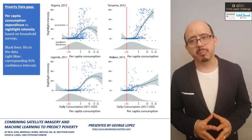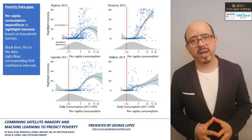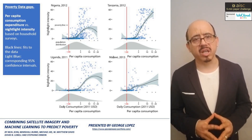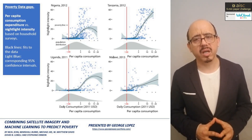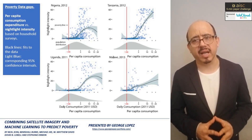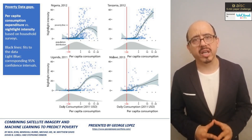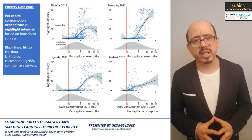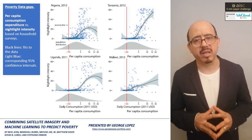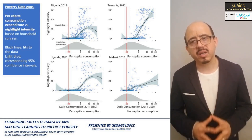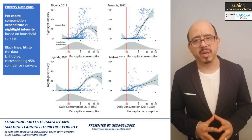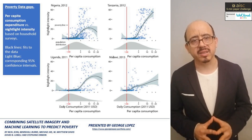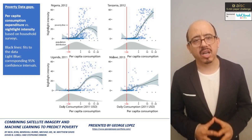They claim their method for predicting poverty is accurate, inexpensive, and scalable. They achieve such predictive power by combining survey and satellite data, where a convolutional neural network, or CNN, can be trained to differentiate features on daylight satellite images. In their study, they consider four African developing countries, and the granularity of the data they are estimating is at the household level.